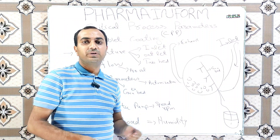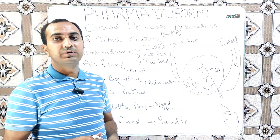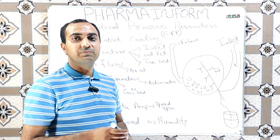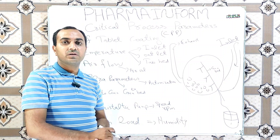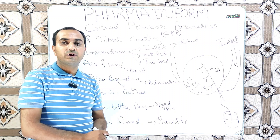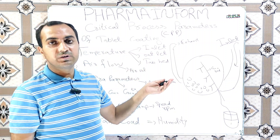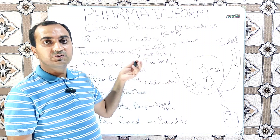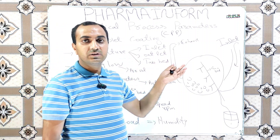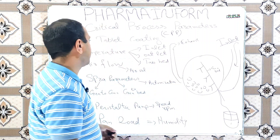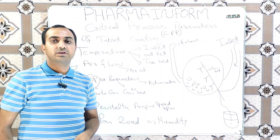As the name indicates, any parameter which makes a direct effect over our product is known as a critical process parameter, and it should be monitored and observed critically during the whole process. Let's start the critical process parameters for tablet coating.